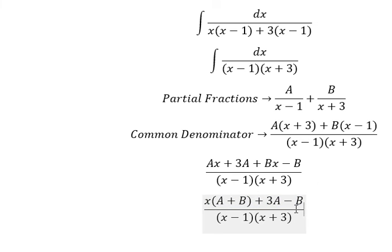Now we need to compare coefficients. Coefficient of dx, that's number 1. So we have 3A minus B equals 1. About x, that's A plus B. We don't have x, so A plus B equals 0.